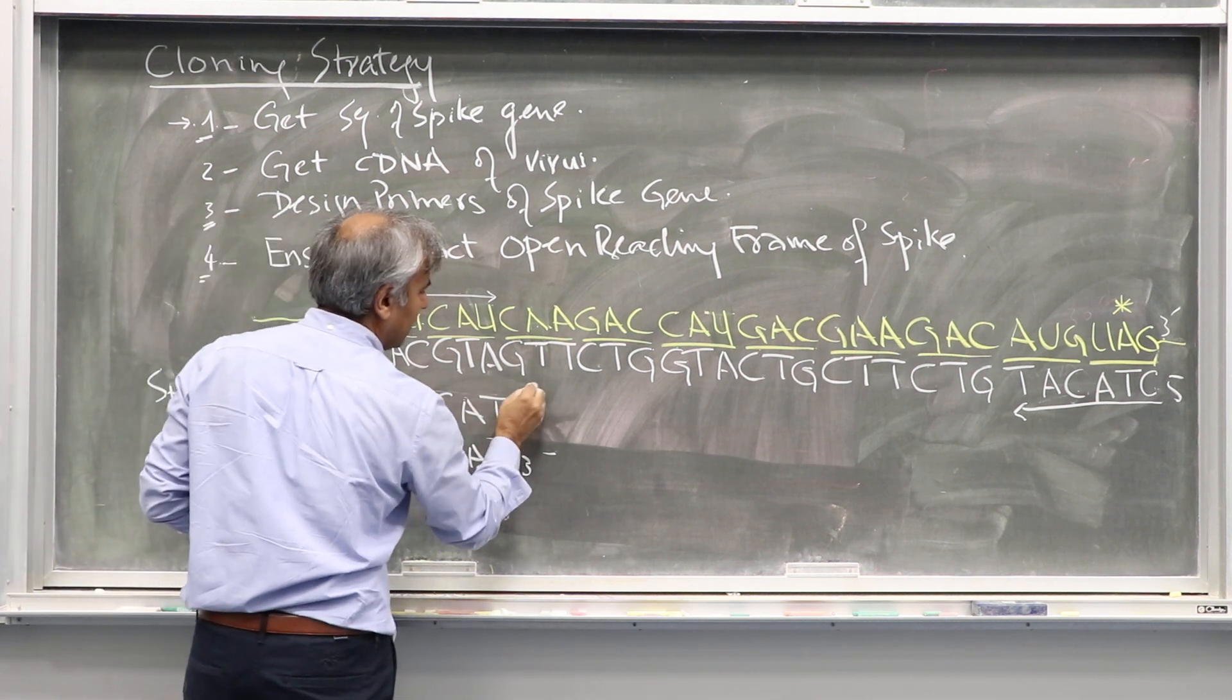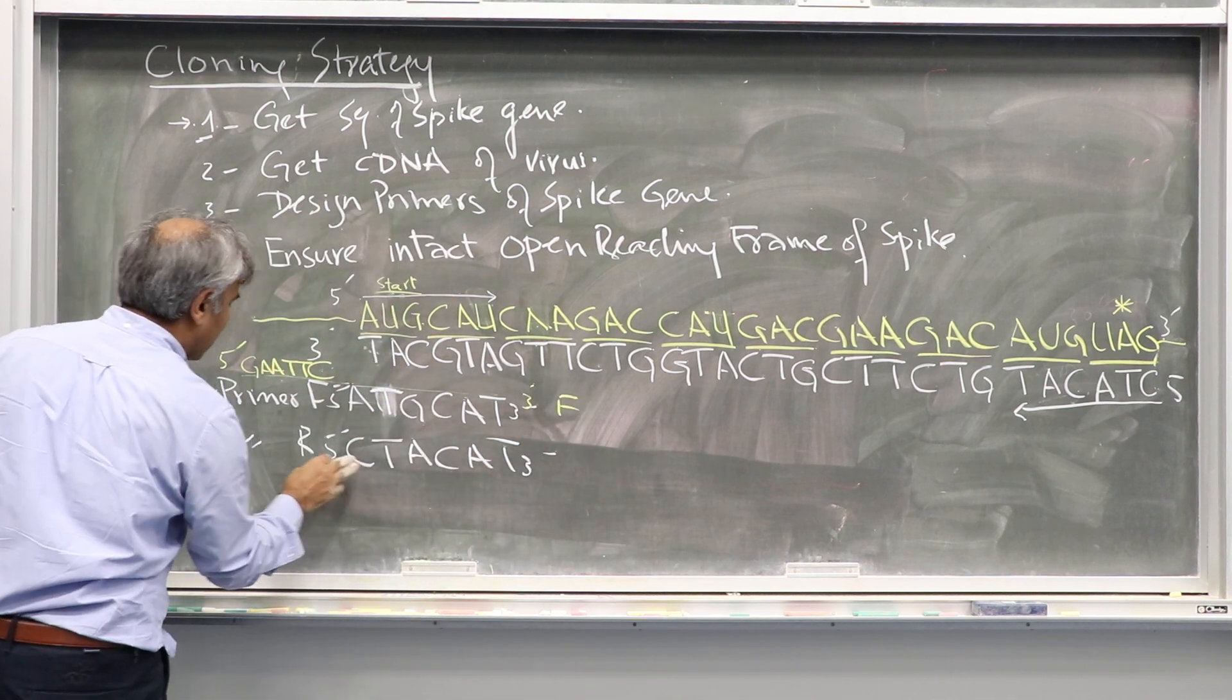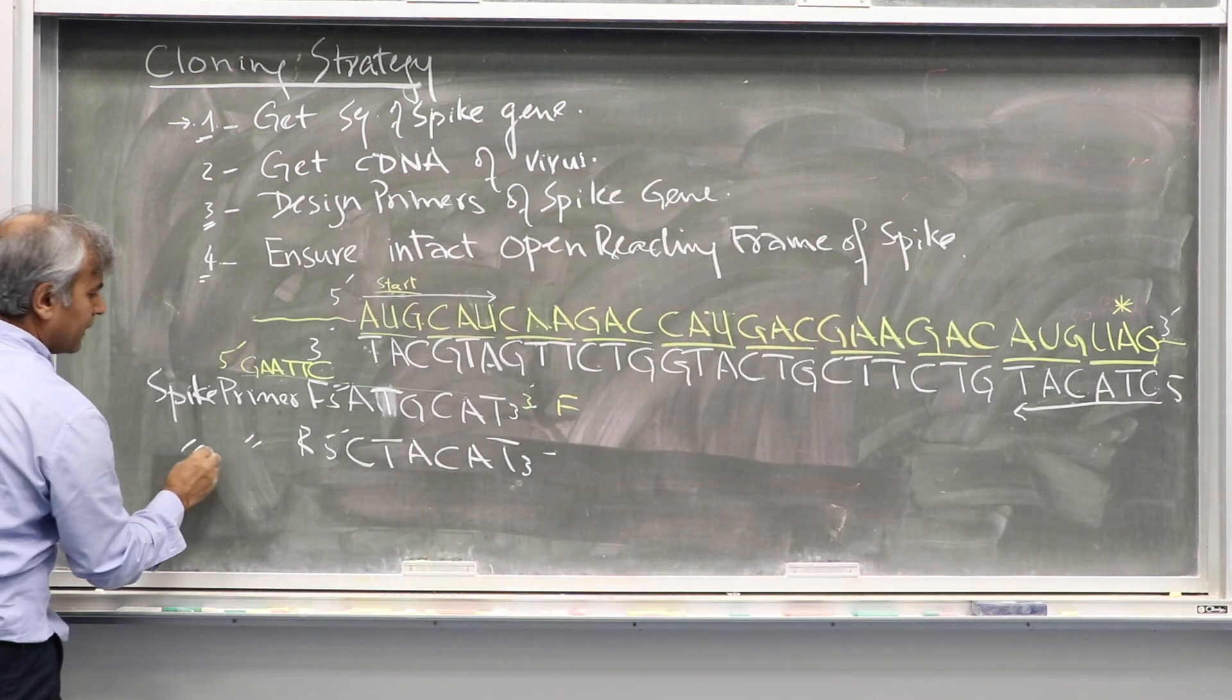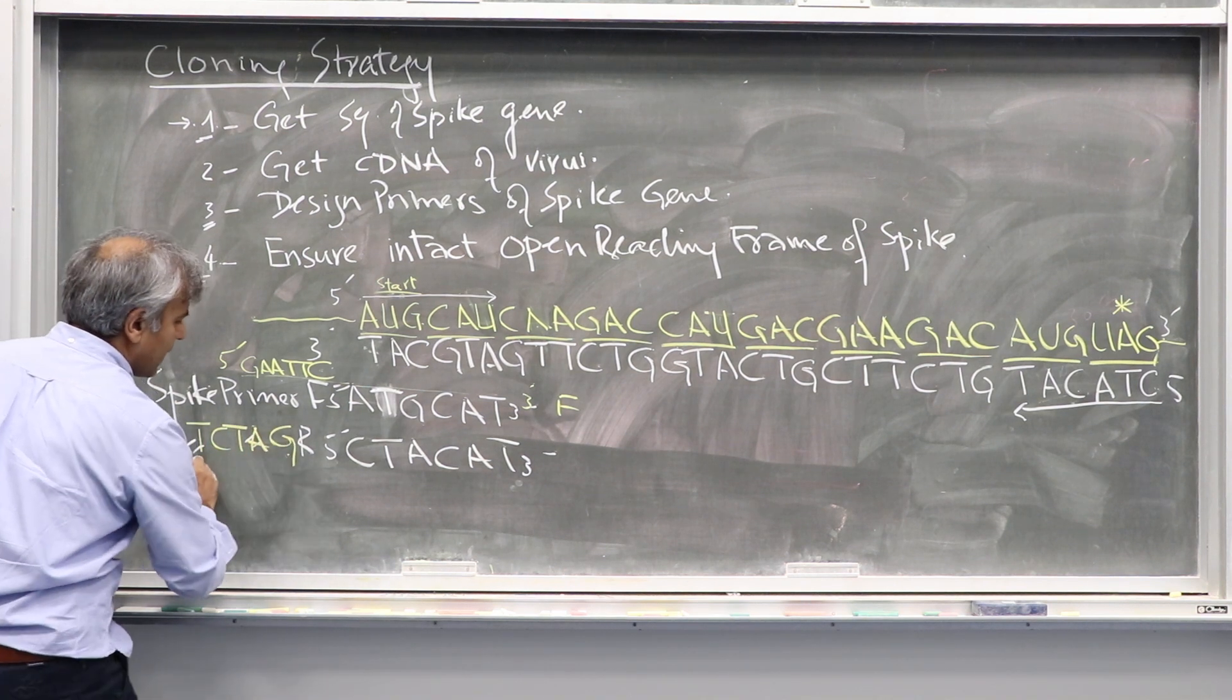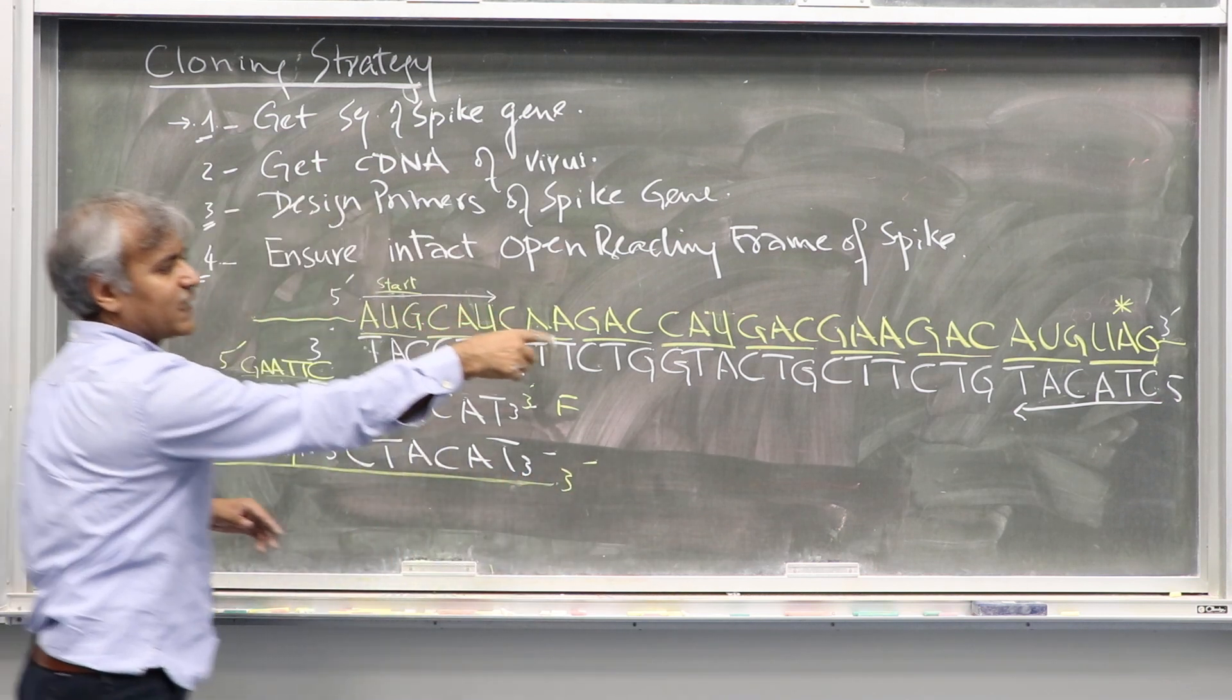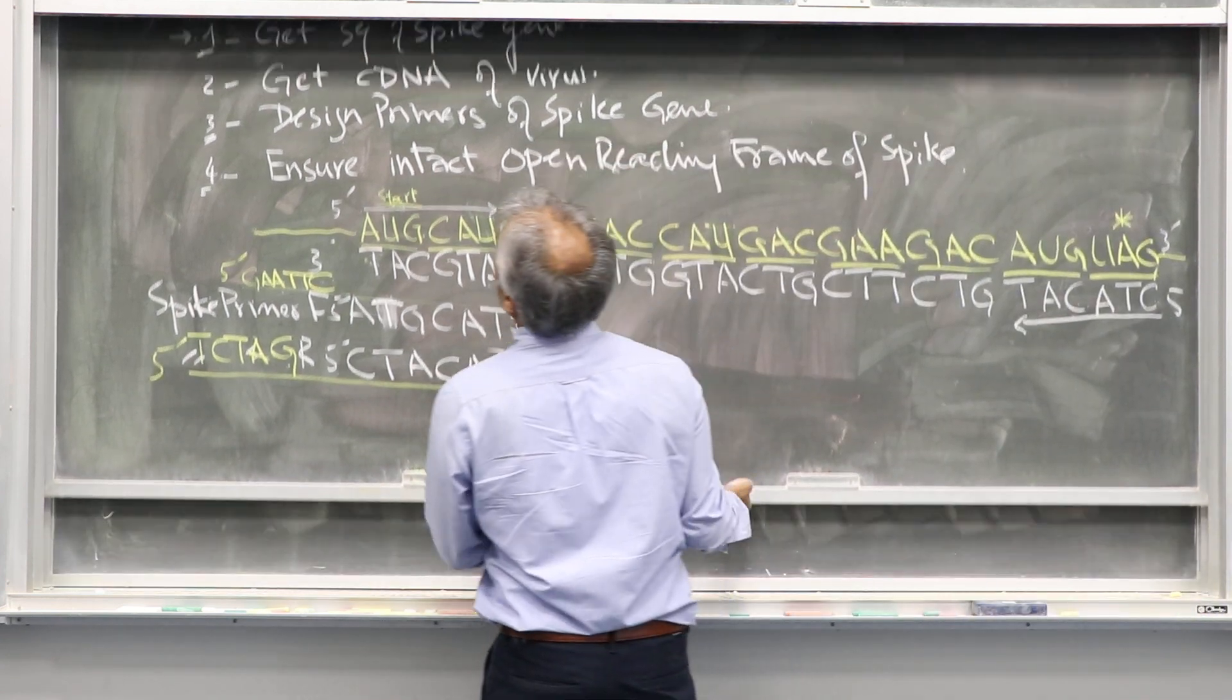This is now the complete forward primer EcoRI. Similarly, we will have 5' to 3' for the reverse primer. We will also have T-C-T-A-G-A and then the whole sequence, and this will be the reverse primer for the spike gene.